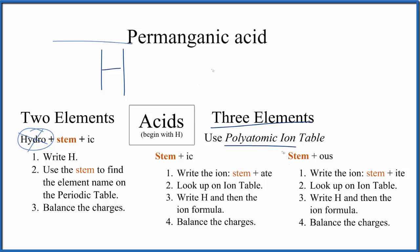So what we do is we write the stem. This is the stem right here, and then we have the IC. So stem plus IC, we'll use these guidelines. We write the stem, that's the permangan, and we're going to take this IC ending and replace it with ate.